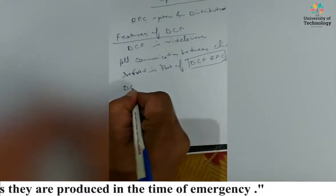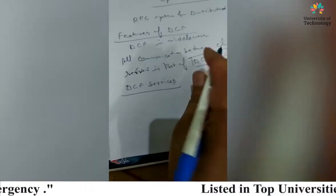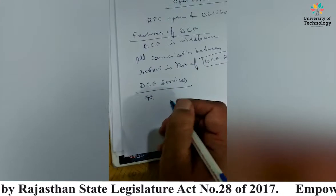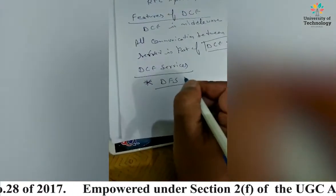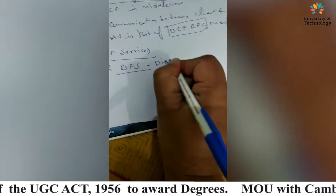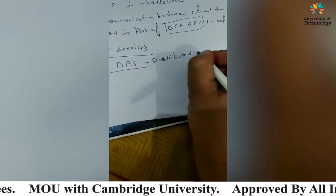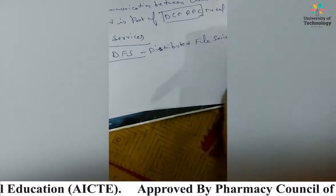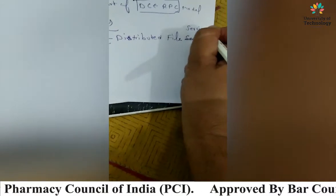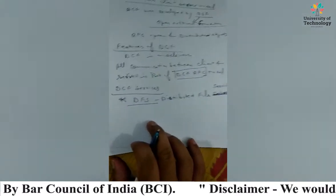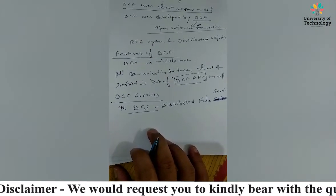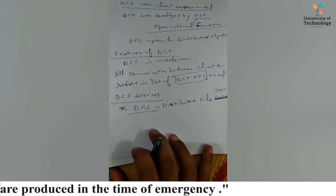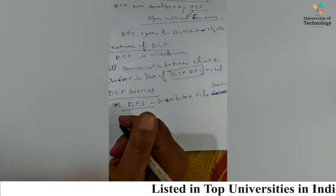The DCE services are: first, DFS — Distributed File Service. This refers to a worldwide file system that provides a transparent way of accessing files in the system in the same way as if they were at the same location.